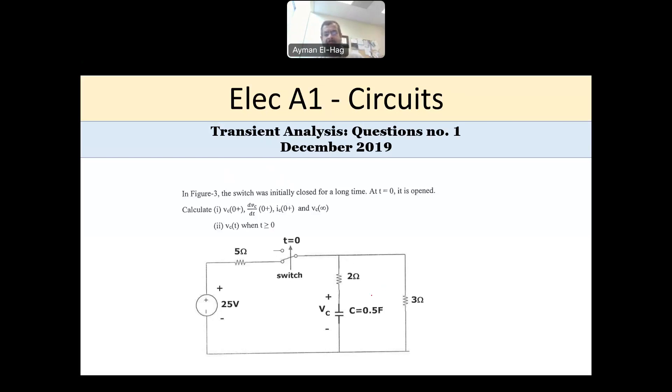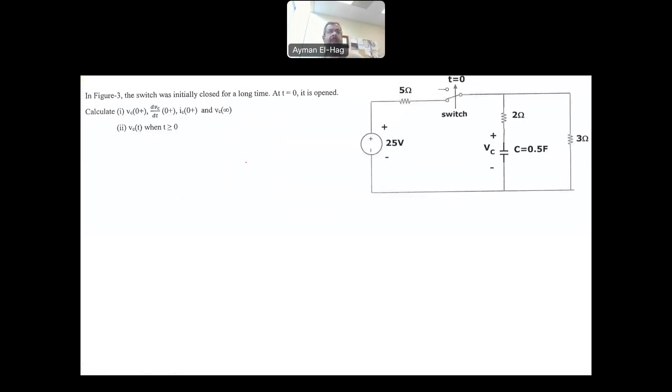So basically, you have one of the elements, you have a capacitor, and you have a switch, and you have a DC supply and resistors. So let's see what the question is asking us to do. The switch was initially closed for a long time at t equal to zero, it opened. So the switch moved from closed circuit to an open circuit.